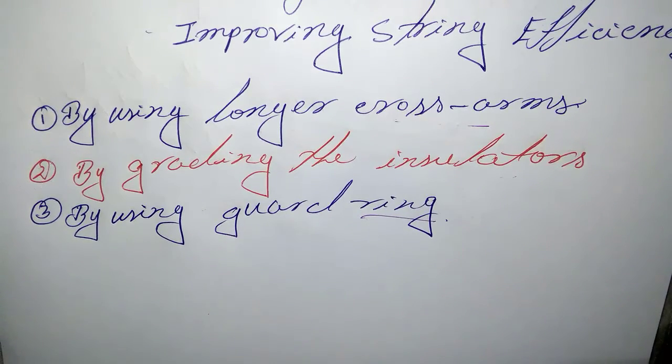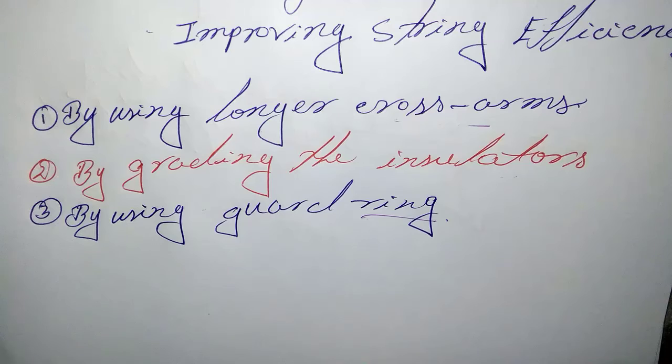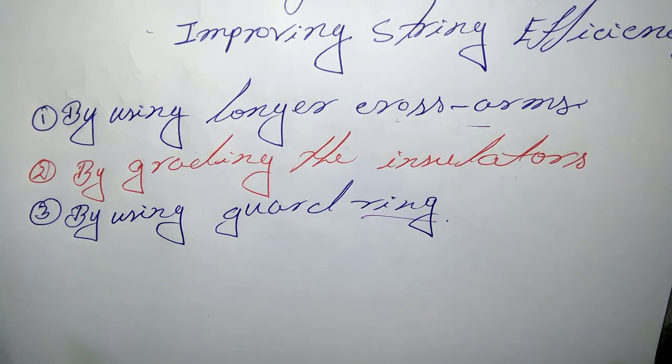Next method is by grading the insulators. In this method, insulators of different dimensions are chosen so that each has different capacitance. The insulators are capacitance graded and assembled in the string in such a way that the top unit has minimum capacitance.